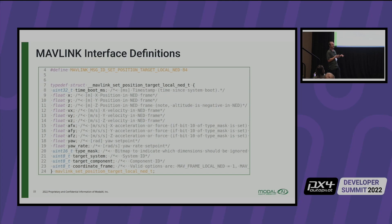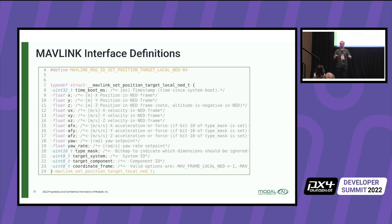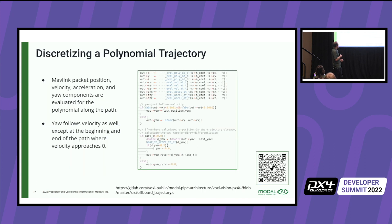We're completely taking out the interpretation of the sticks, which normally gets translated into position and velocity set points, and we're taking over those controllers ourselves. The nice thing about polynomial trajectories is they're very easy to evaluate the first, second, and third derivatives through time, which makes them easy to optimize but also easy to implement.